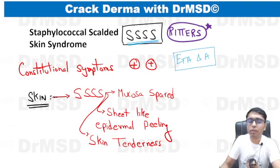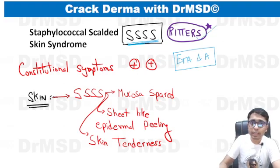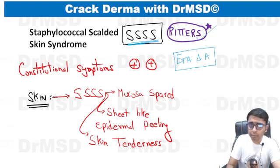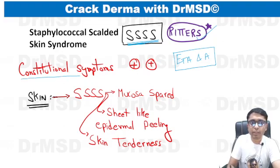When these toxins spread hematogenously, they produce what is called Staphylococcal Scalded Skin Syndrome, or Ritter's disease. The child who presents with this condition will have fever, arthralgia, myalgia, and malaise.